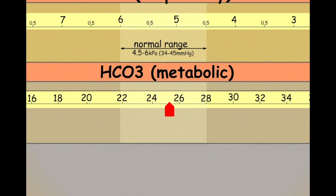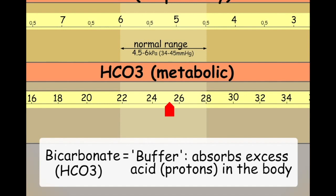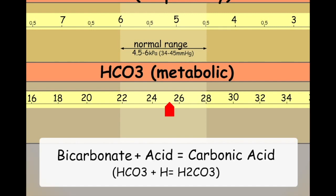The bottom element of our model represents the metabolic component of acidosis. We measure the metabolic effects on blood pH by measuring the bicarbonate levels in our ABG. Bicarbonate is primarily produced by the kidneys and acts as a buffer for pH in the blood. It effectively mops up excess protons, excess acid, and converts it into carbonic acid.